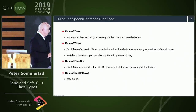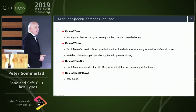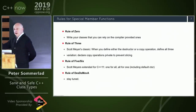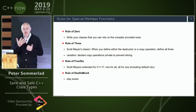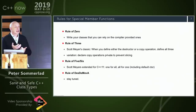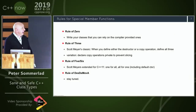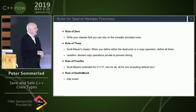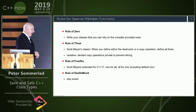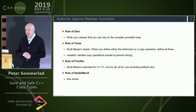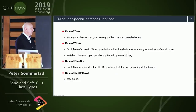Special member functions are: constructor, copy constructor, copy assignment, move constructor, move assignment, and destructor — six total, counting the default constructor. They are just provided by the compiler when you define a class type. The best rule in modern C++ is the Rule of Zero: the compiler does the same thing and you get exactly what you need from compiler-provided special member functions.